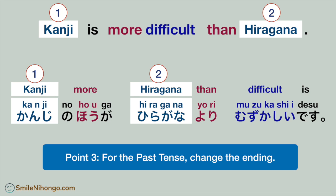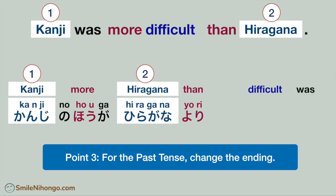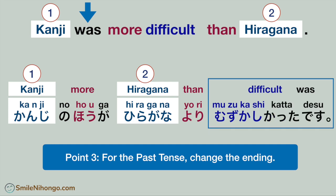Point number three: for the past tense, you only need to change the ending of the sentence. For example, if you want to say 'kanji was more difficult than hiragana' in the past, all you have to do is change the adjective 'difficult' to the past tense — 'was difficult.' I hope you still remember how to conjugate i-adjectives to the past tense. The result is: 漢字のほうがひらがなより難しかったです。